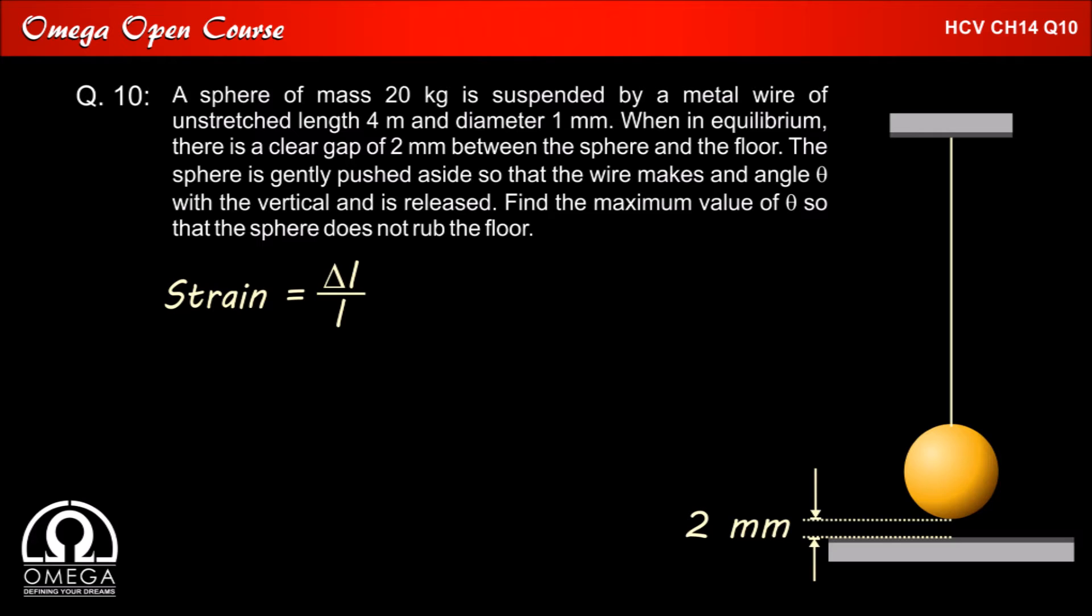We know that strain is given by delta L divided by L. Please note that the length of the wire at equilibrium will be slightly more than 4 m as wire is being pulled by weight of the sphere. But since Young's modulus of the metal is very large the elongation of the wire will be small and we can ignore that. So the strain will be 2 mm divided by 4 m that is 2 x 10 to the power minus 3 divided by 4 which comes out to be 5 x 10 to the power minus 4.